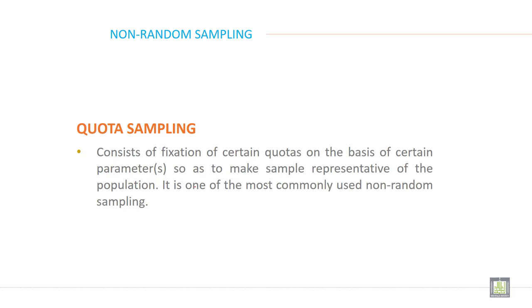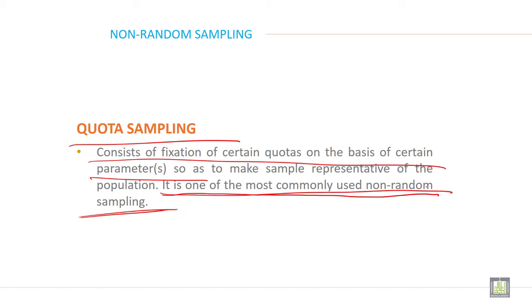Quota sampling consists of fixing certain quotas based on certain parameters to make the sample representative of the population. It is one of the most commonly used non-random sampling techniques. Remember this.